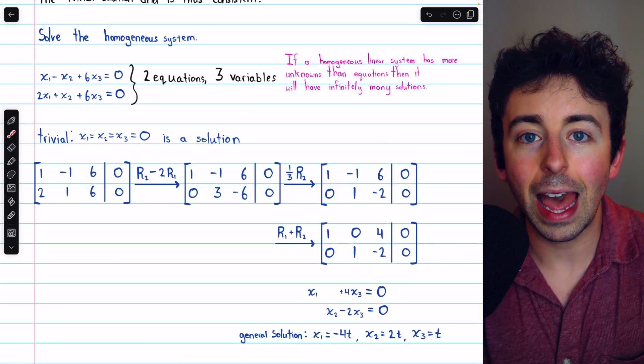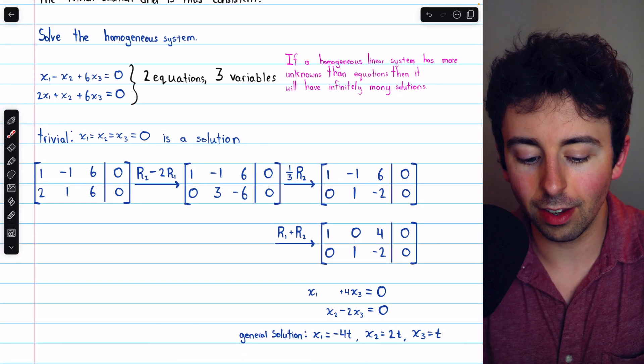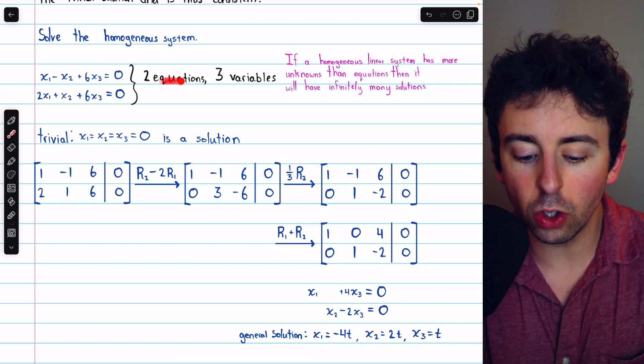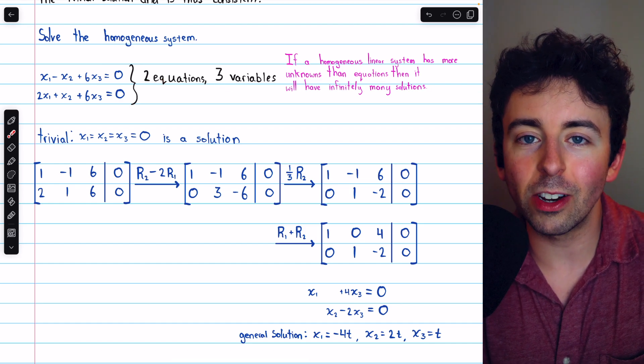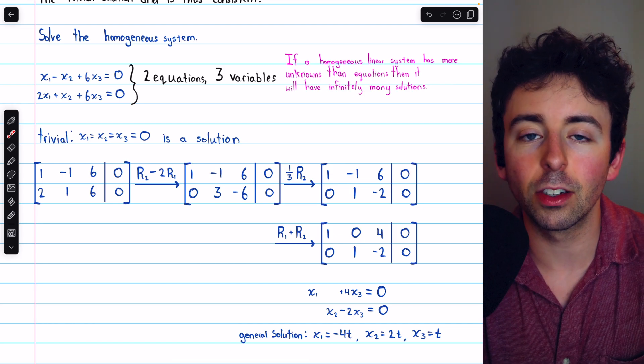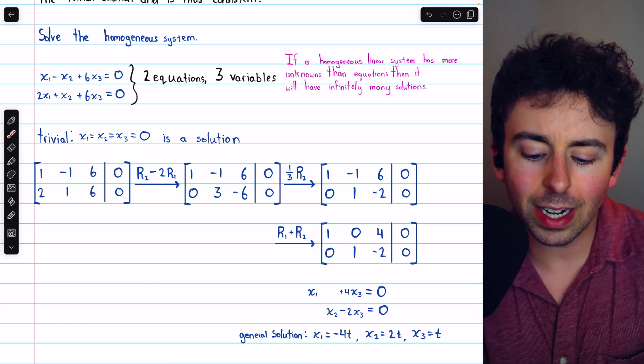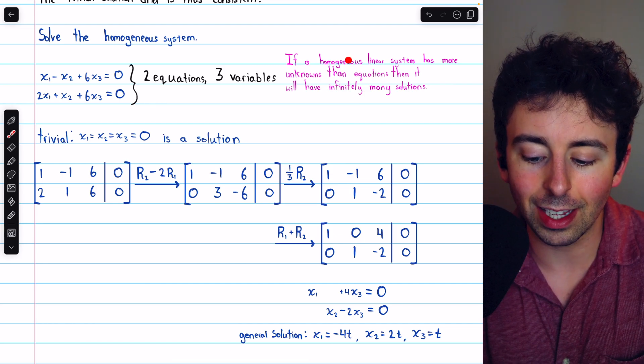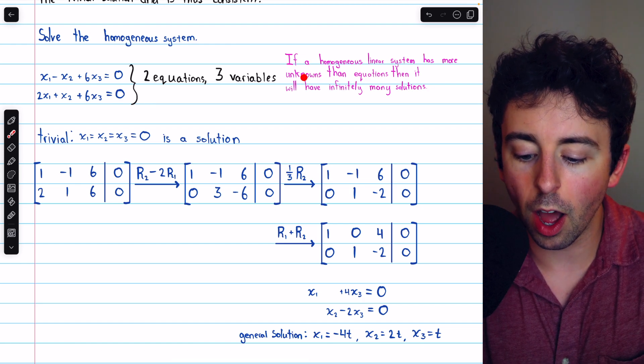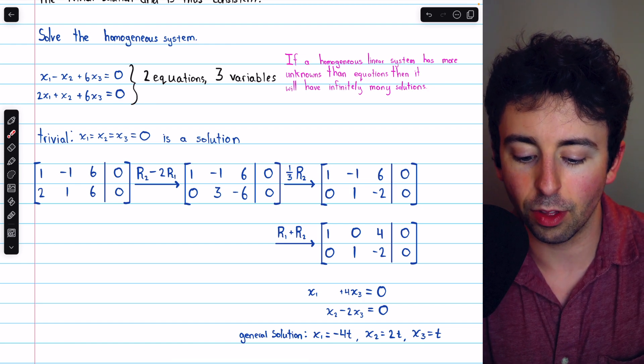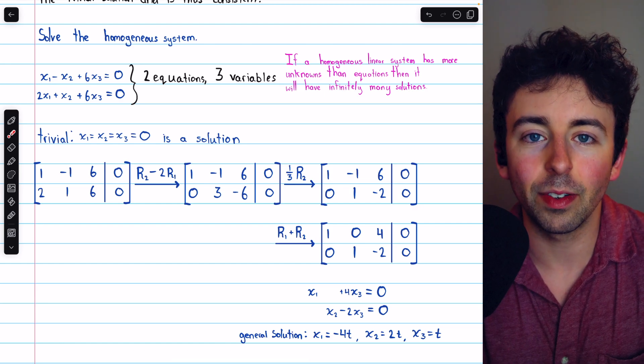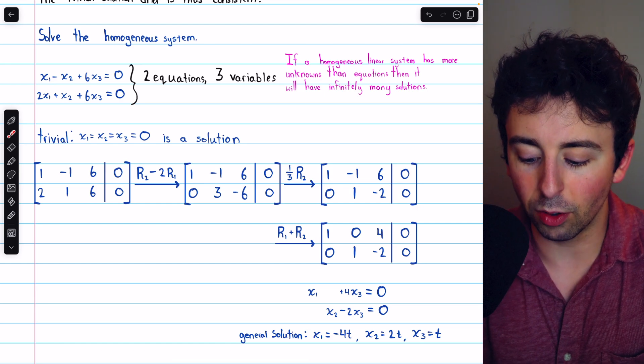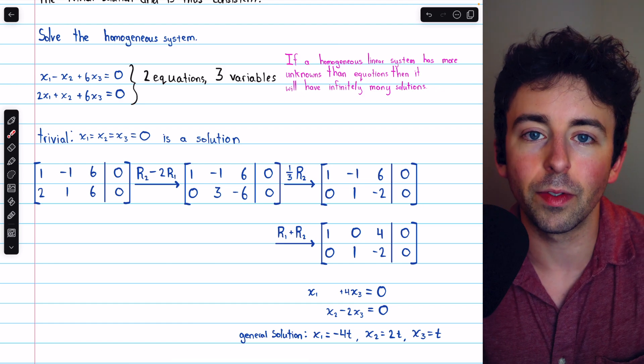Not every homogeneous system has non-trivial solutions. But this system had only two equations, but with three variables. Two equations is never enough to fully determine three variables. So any system like this, a homogeneous linear system with more unknowns than equations, three compared to two, will always have infinitely many solutions, because we'll have at least one free variable.